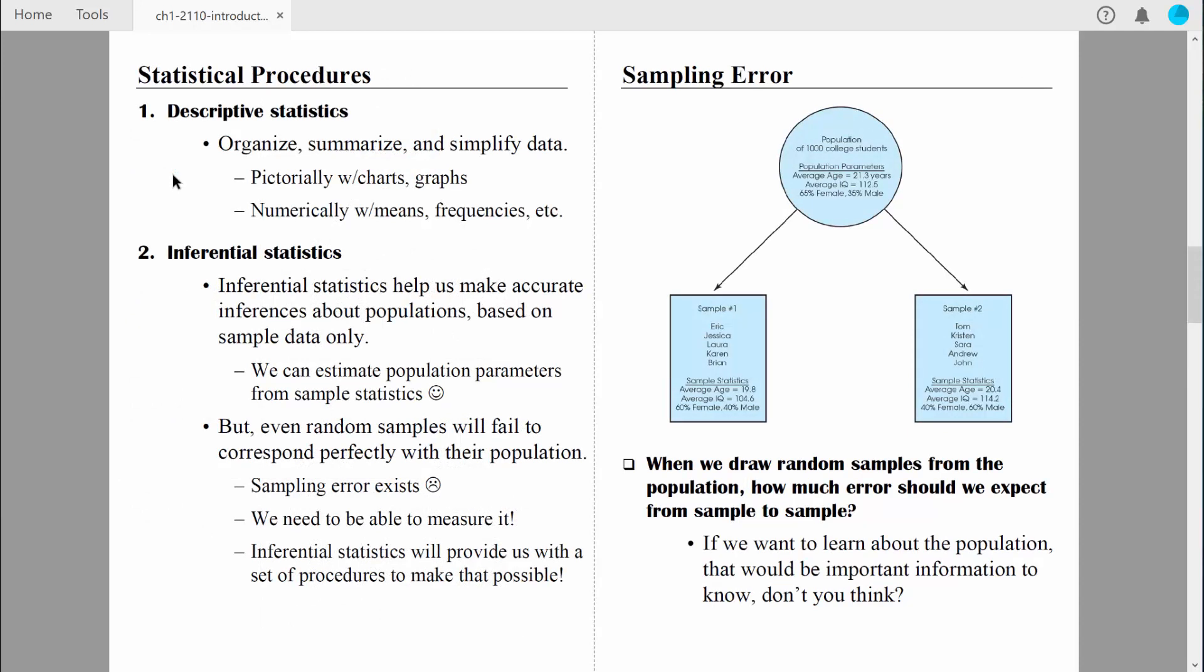So those were some good examples of descriptive statistics. And again, the objective is simply to organize our data, summarize our data, and just in general, simplify our data so that we can effectively communicate the results to other people. Descriptive statistics are really pretty straightforward. And we will cover descriptive statistics in our class during the first few weeks. But you're going to find out that we're going to want some statistical procedures that are a little bit more powerful. And that moves us into the realm of inferential statistics.